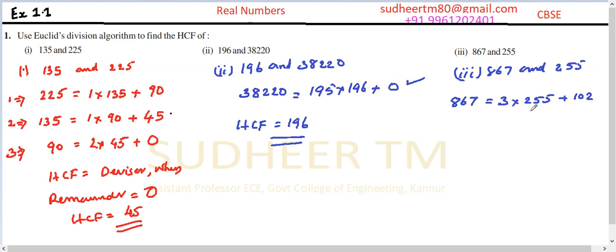Bring the divisor 255 to the left as the new dividend for step 2. Now dividing 255 by 102, we get a quotient of 2: 255 = 2 × 102 + 51. The remainder is 51, which is not 0, so we continue.